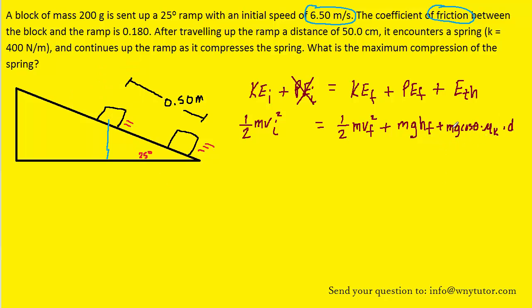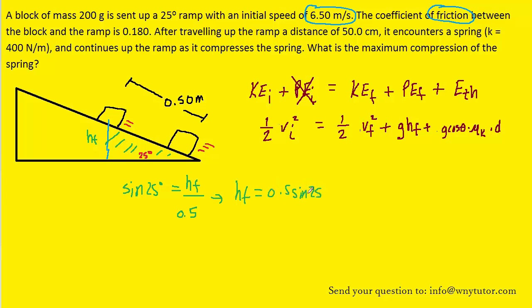Now we will notice that all the terms contain mass, so we can cancel the mass out of each part of the equation. We also can make a substitution for the final height. If we look at the diagram, the final height was marked with that blue line. We have a bit of a right triangle right there, so we know that the sine of 25 degrees would equal the opposite side, which would be the final height, divided by the hypotenuse. Well that hypotenuse is 0.5 meters. So when we cross multiply this equation, the final height is going to equal 0.5 sine of 25.